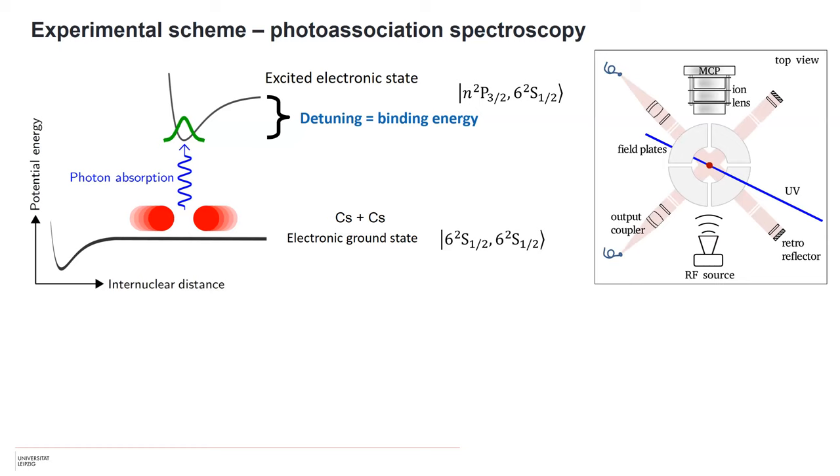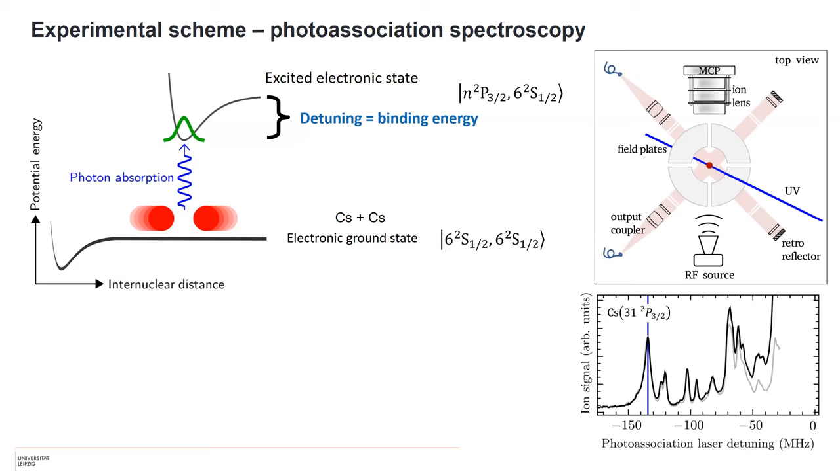The experimental setup is a simple magneto-optical trap with electrodes to apply correction fields for stray electric fields and field ionization. We detect charged particles. We form molecules with a single UV photon going from the ground state to a Rydberg state directly, and we do radio frequency spectroscopy of these molecules once they are formed. Typical experimental results look like this: the laser is on the atomic transition - it's a very strong laser, you get a lot of signal. As you detune it to the red, you see many resonances.